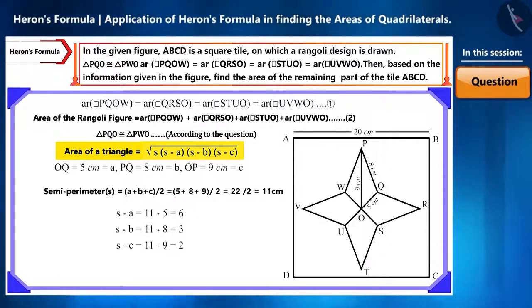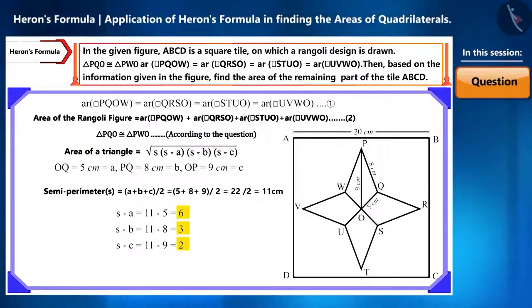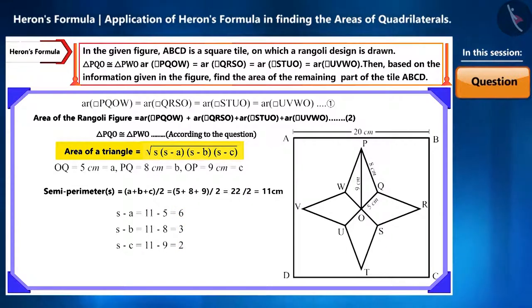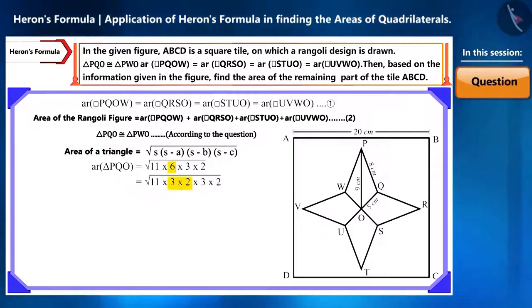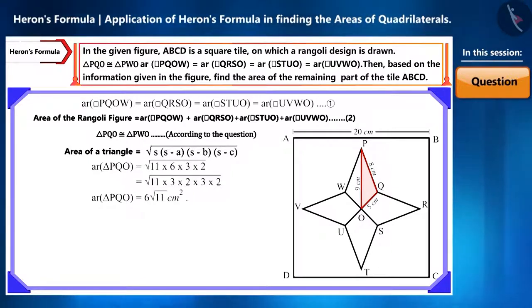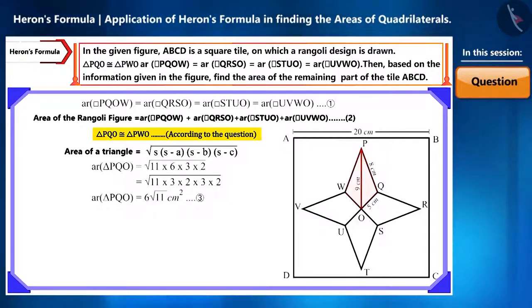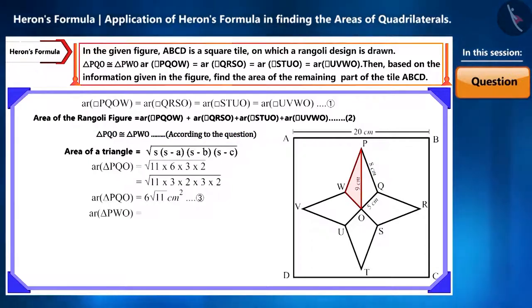Keeping the formula in mind, let's find the values of s minus a, s minus b, and s minus c. We obtain these as 6, 3, and 2 respectively. Now we substitute all these values into Heron's formula and solve it. We obtain the area of triangle PQO as 6√11 square centimeters.